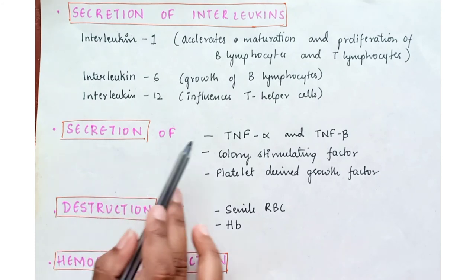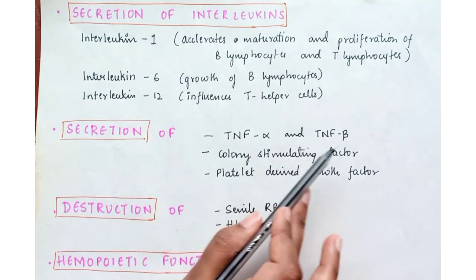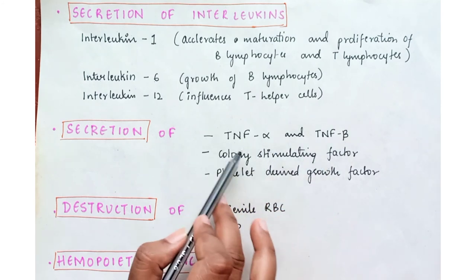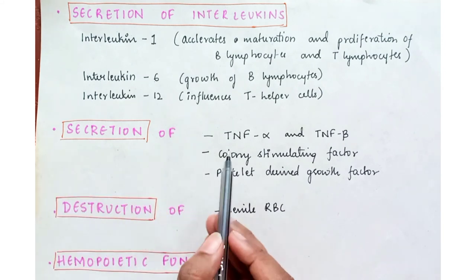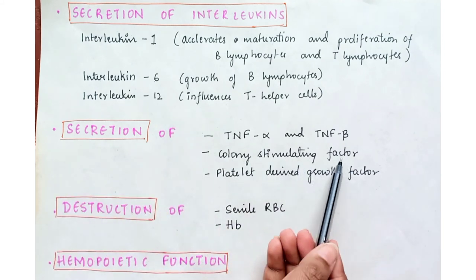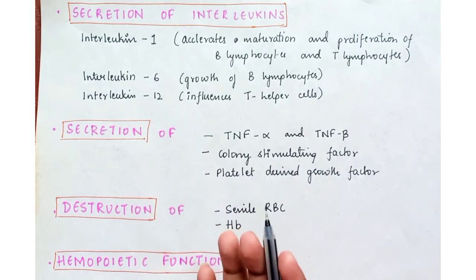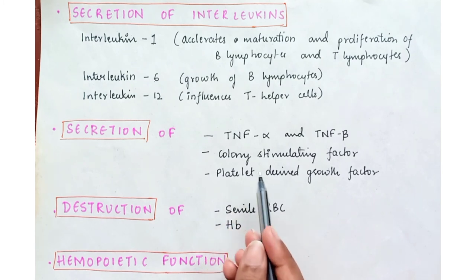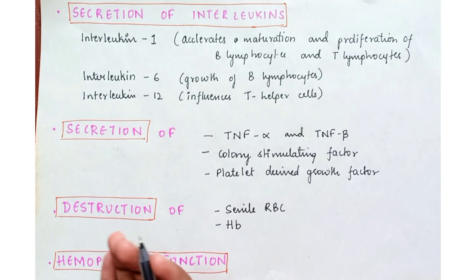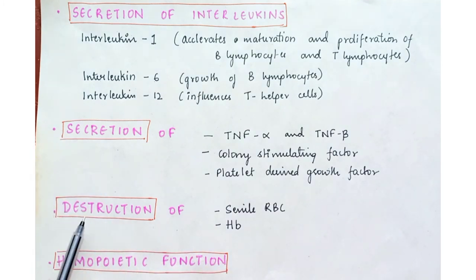Macrophages also secrete various other substances. Tumor necrosis factor alpha and beta are secreted, which help in the activation of the immune system. They also secrete colony stimulating factor, which helps in the growth of granulocytes, monocytes, etc. Additionally, platelet-derived growth factor is secreted, which accelerates the repair of damaged blood vessels and wound healing.